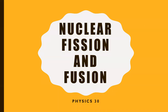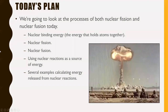Today's lesson is going to be on nuclear fission and fusion. This is where things get pretty weird, but it does build off a lot of the concepts we've already talked about. We're going to look at the processes of both nuclear fission and nuclear fusion. First, we'll talk about nuclear binding energy — the energy that holds atoms together. Then nuclear fission, then nuclear fusion, then using nuclear reactions as a source of energy, and finally several examples calculating energy released from nuclear reactions.